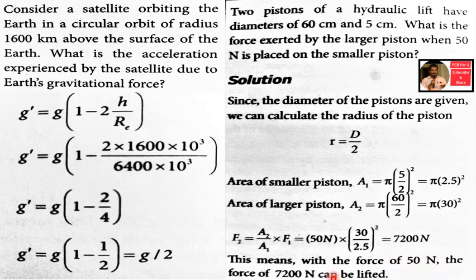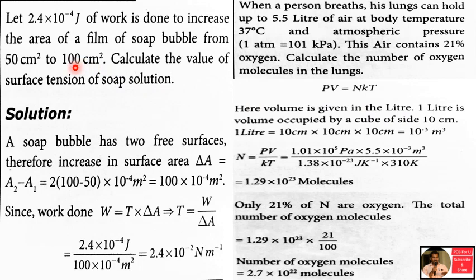2.4 into 10 power minus 4 joule of work is done to increase the area of a film of a soap bubble from 50 cm² to 100 cm². We need to convert centimeters to meters: 1 cm equals 10 power minus 2 metres, so 1 cm² equals 10 power minus 4 m². A soap bubble has two free surfaces, so the increase in surface area must account for both surfaces.